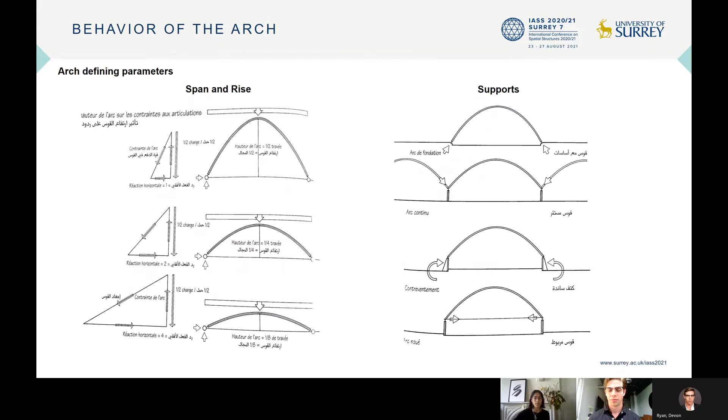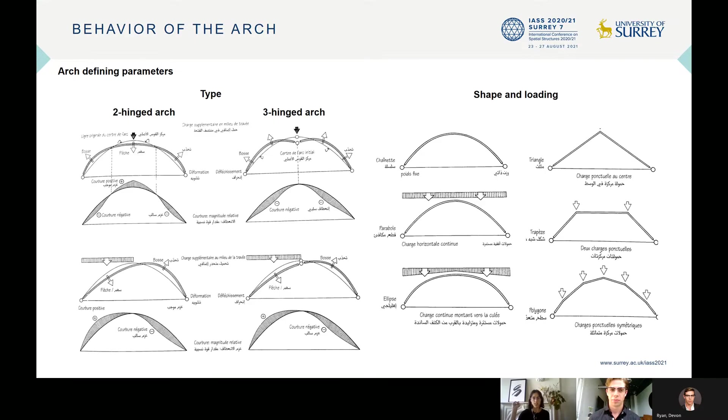As a very first step of the design, we simplified the roof geometry, 3D complex geometry, by studying the structural diagram of a two-dimensional arch and the different parameters that define the arch structure: span, rise, support condition, type of arch, shape, and loading.